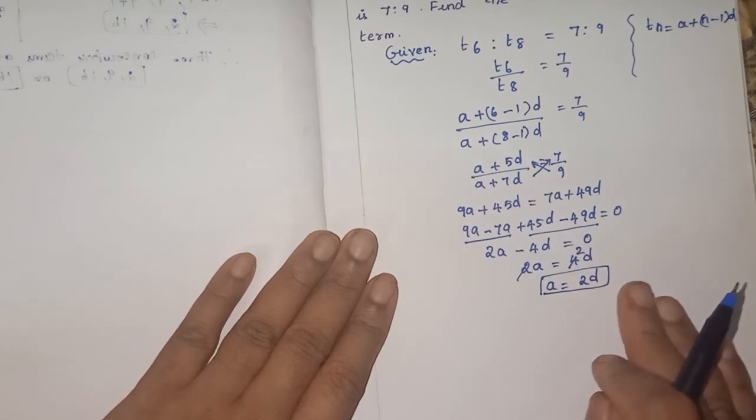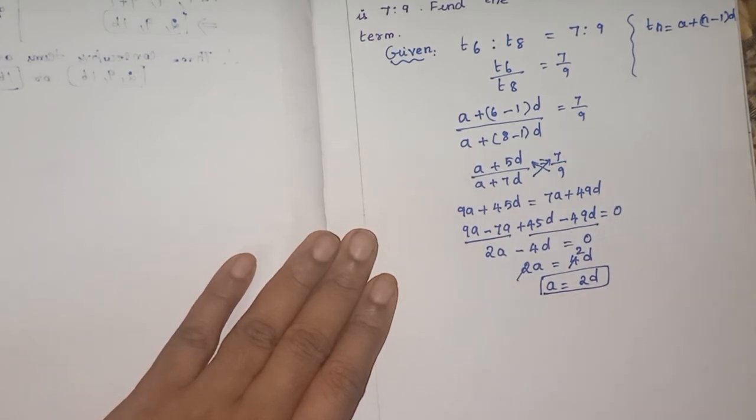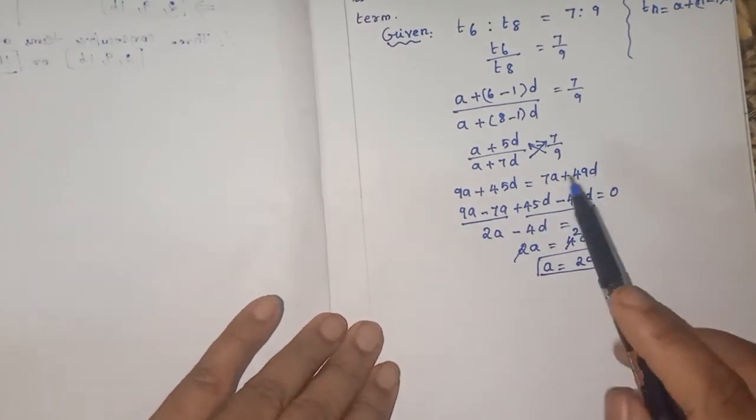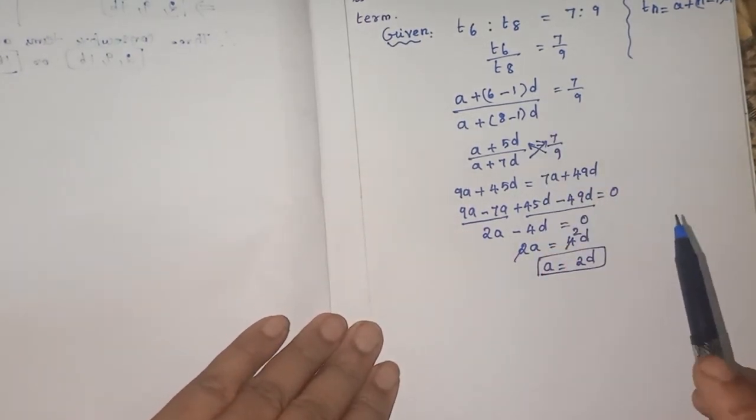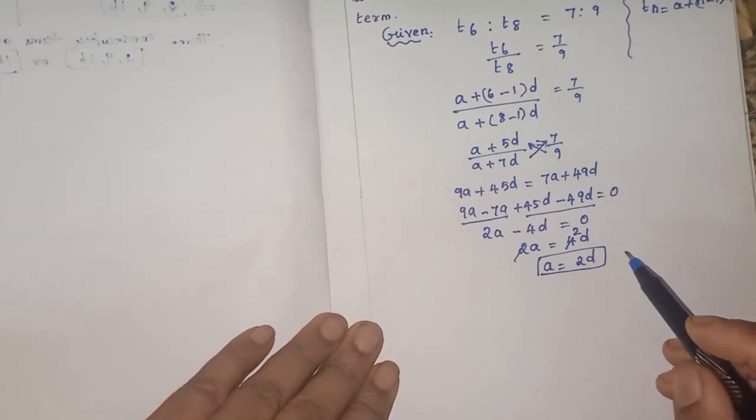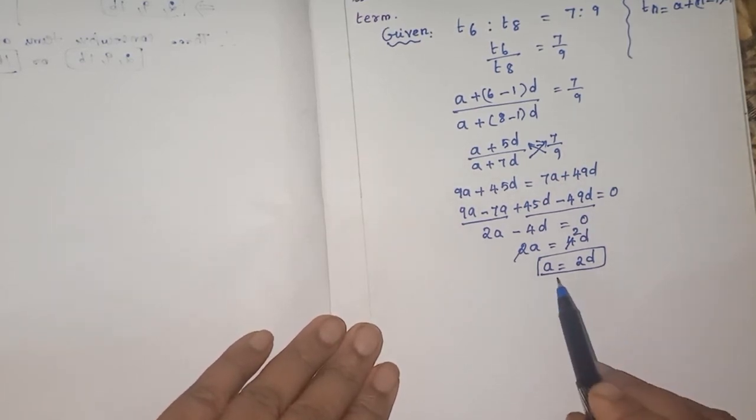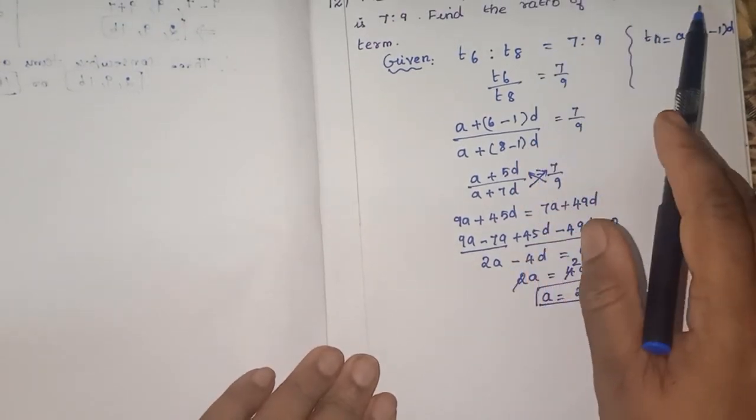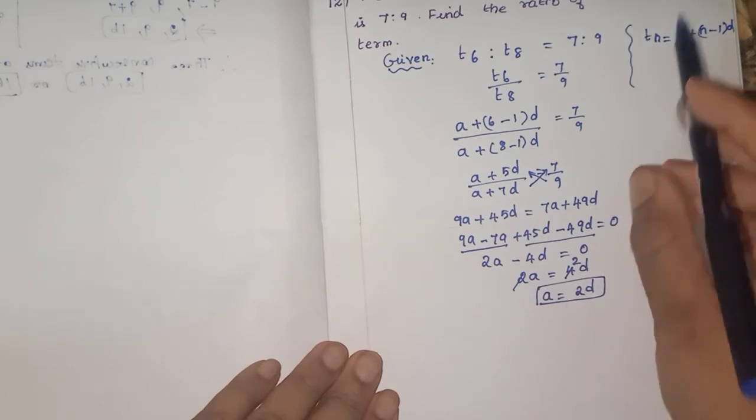We are getting A is equal to 2D, so we can substitute in the term. The term A, you can substitute 2D. This is the conclusion we are getting out of the given hint. Otherwise D is equal to A by 2. So now A is equal to, in place of A you can substitute 2D for what is asked in the question. We can find the ratio.